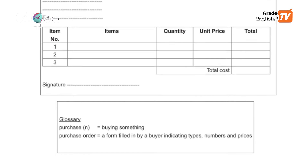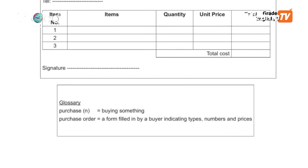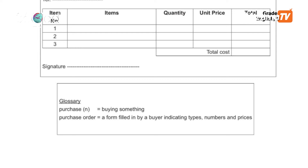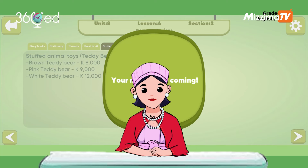A purchase order is a form filled in by a buyer indicating types, numbers, and prices. If you buy something, you fill in a purchase order with the total number and total cost.